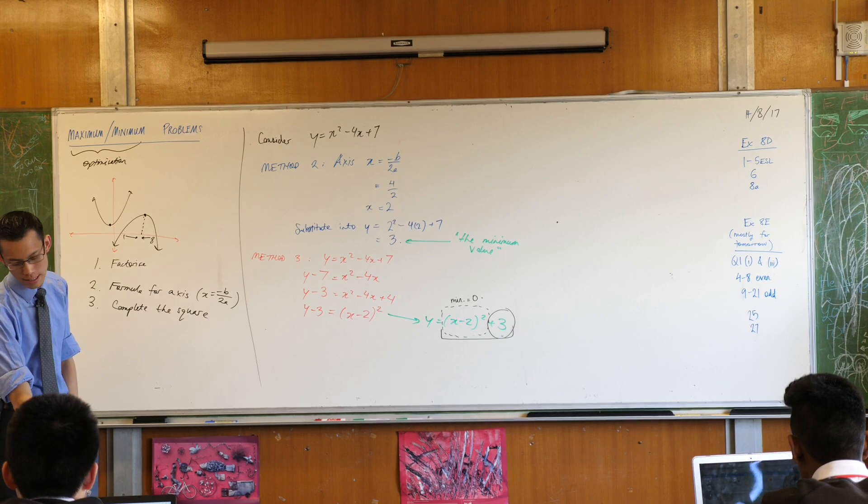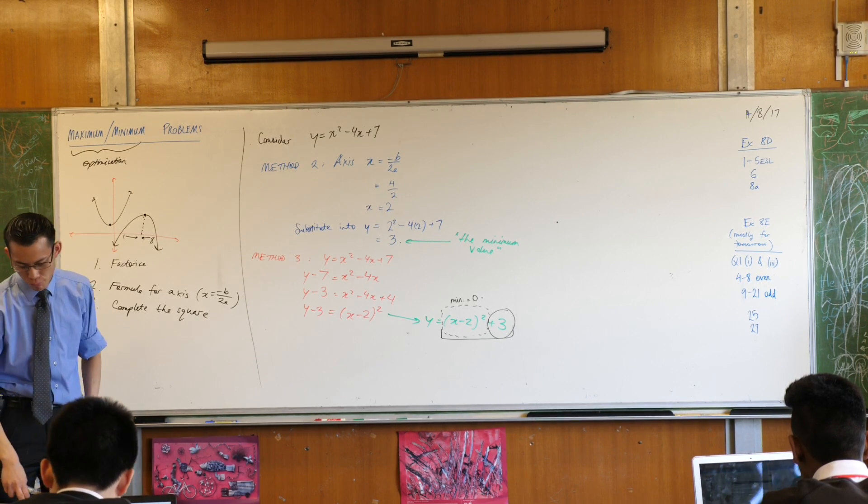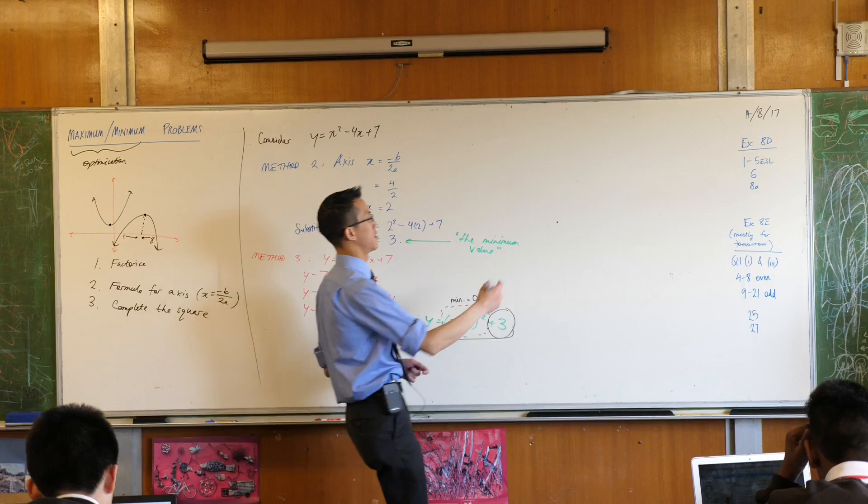Okay? So let's actually just quickly do this together. A rectangle has a perimeter of 16 meters. I'm just going to write down perimeter 16 meters.